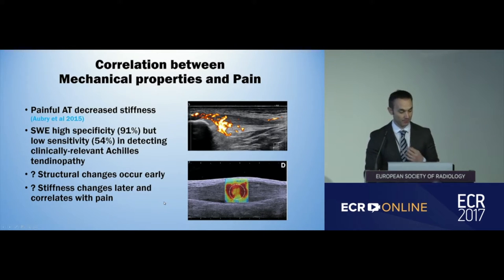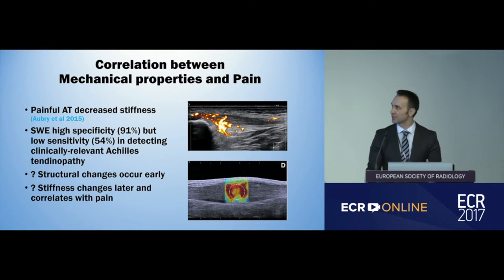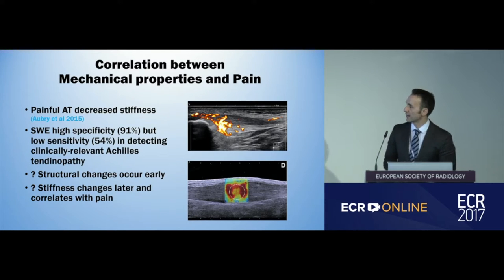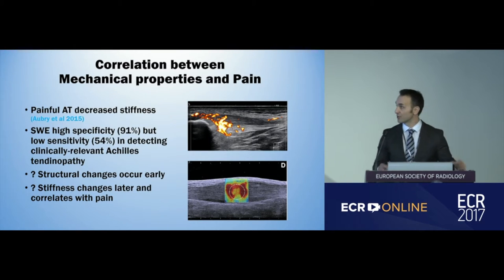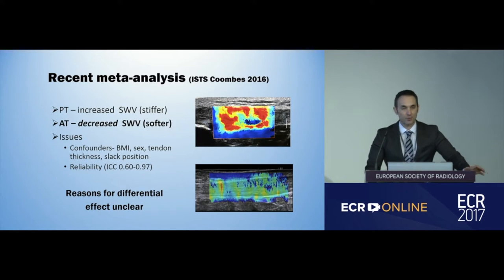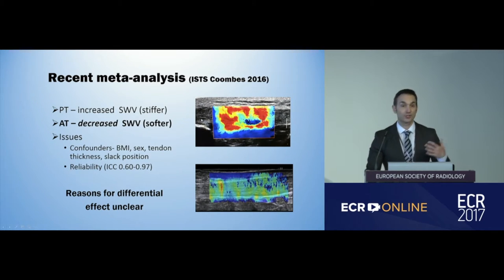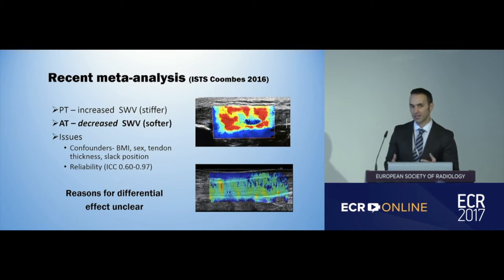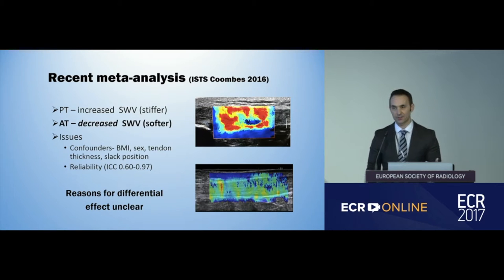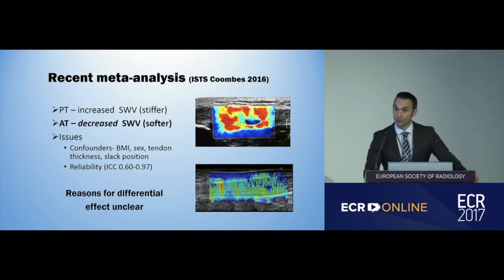In a seminal paper by Aubrey in 2015, it was found that painful Achilles tendons had decreased stiffness, and that shear wave elastography may lack sensitivity in diagnosing tendon disease, but might correlate with pain quite well. A recent meta-analysis by Coombs, presented at a tendon conference in 2016, confirmed these findings: patellar tendon shows increased stiffness in tendinopathy while Achilles tendon shows decreased stiffness. The reasons for this differential are really unclear and require much more research.